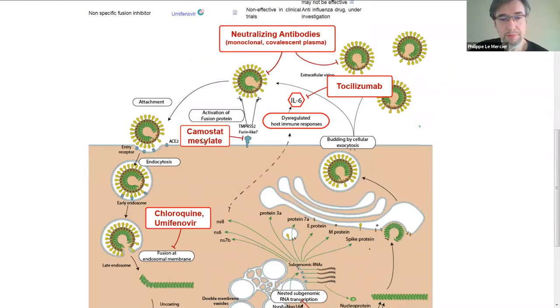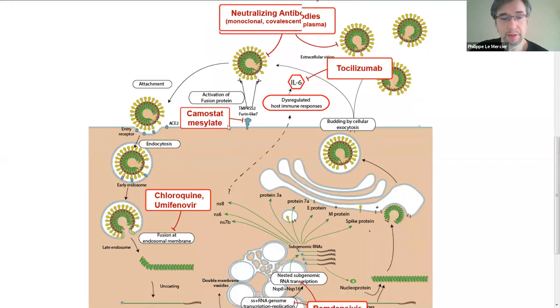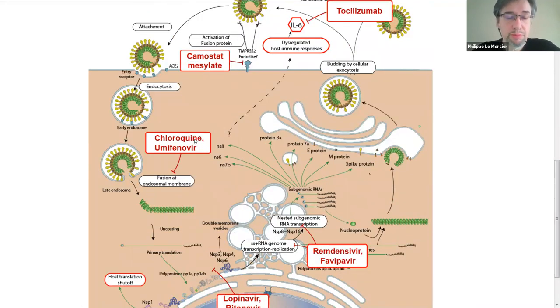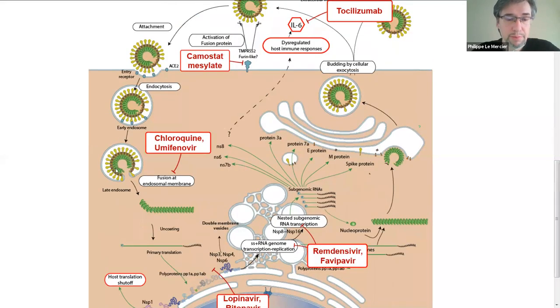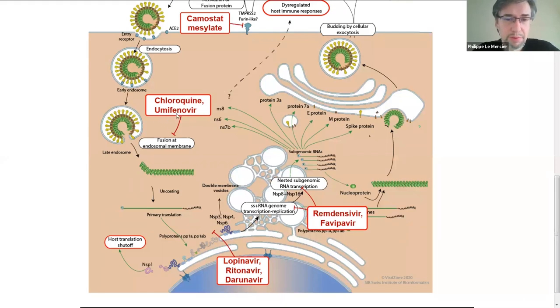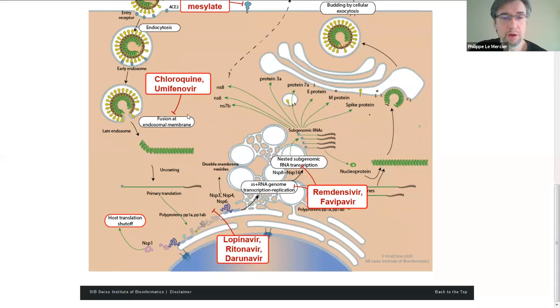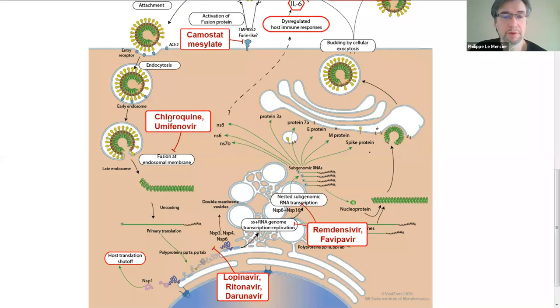You have camostat mesilate, which is a drug which inhibits TMPRSS2. This drug could prevent this activity in the lung, so no cleavage of the fusion protein, so no fusion activity. You have also chloroquine, which is a repurposed drug. It can prevent the maturation of the endosome somehow, so the virus cannot then make fusion. You have umifenovir, a recent drug against influenza. It will prevent fusion. That's been tried as well, but it does not work. Chloroquine is still in investigation.